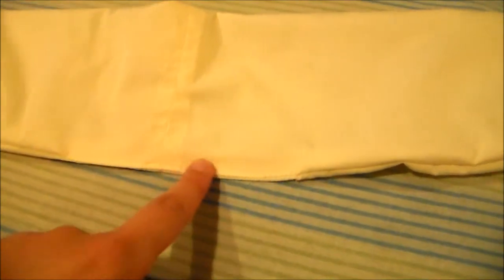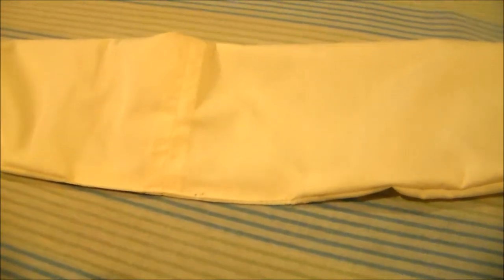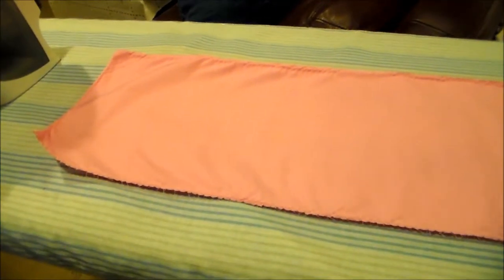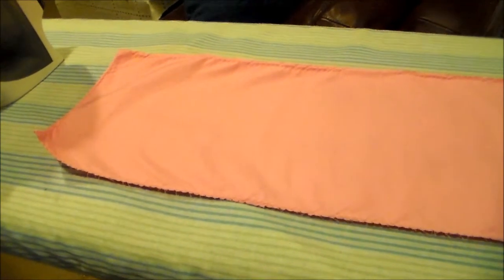Turn the sash right side out, and then you're going to sew closed the little hole in the center. I am not pressing it or doing any top stitching because I want it to have a very fluffy appearance like the reference picture.